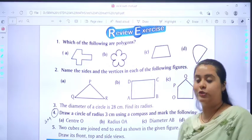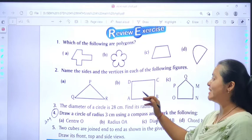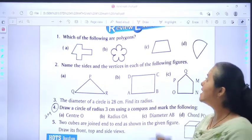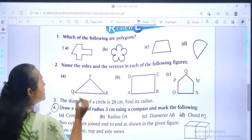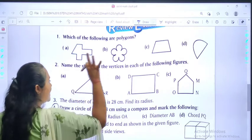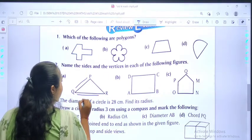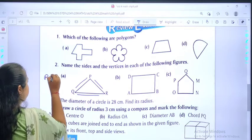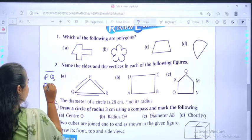Now, let's move to question number 2. Name the sides and the vertices in each of the following figures. We are supposed to write the sides and the vertices. So in this, you can see that 3 sides are there: PQ, QR, PR. So you will be writing PQ, QR, PR.